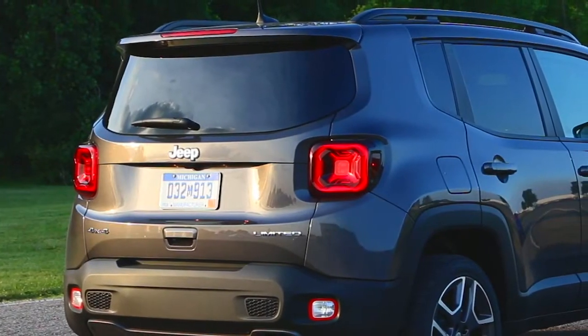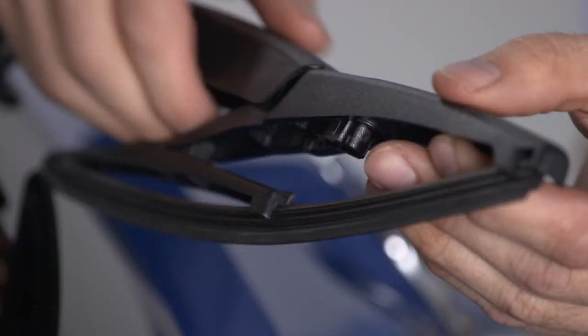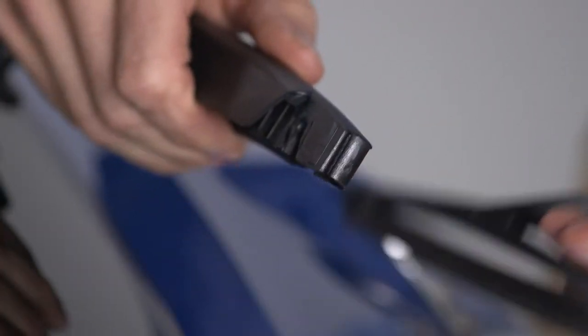To replace the rear wiper blade, carefully lift the rear arm off the glass. Use one hand to grab the wiper arm as close to the wiper blade as possible. With the other hand, push the blade toward the glass to unsnap the pivot pin.